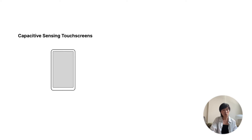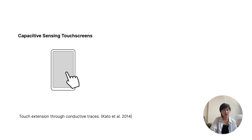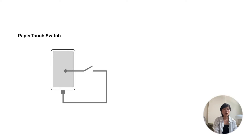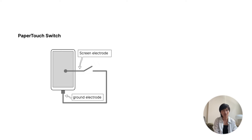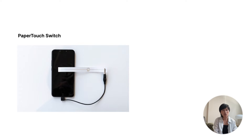To understand how Paper Touch works, we need to start with touch screens. They use capacitive sensing to detect when we touch them. This measures how our finger changes the screen's electrical charge, signaling a touch. Early studies found ways to pick up those touch signals on extension interfaces through conductive traces. Building on this method, we developed a Paper Touch switch that splits a conductive trace into two parts. One part, we call the screen electrode, is held in contact with the touch screen. The other part, which is the ground electrode, is connected to the device ground bus. We found a way to use the device ground bus instead of bare skin touch to trigger touch events on screen.